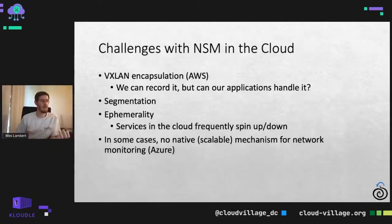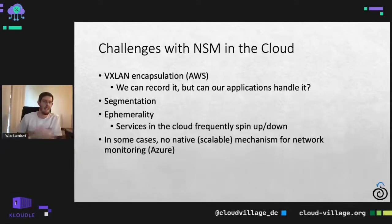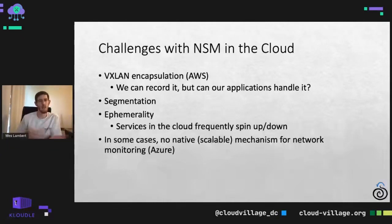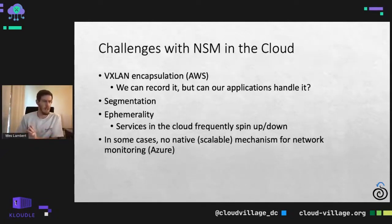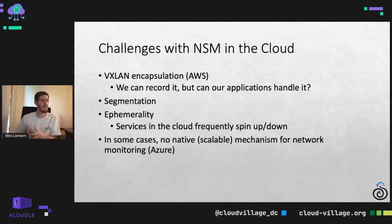In some cases there's no native, really scalable mechanism for monitoring the network. I highlighted Azure here — back in the day they had the virtual tap preview that never really went anywhere. Hopefully that gets revived and going public soon. For some cloud platforms that capability is just not there. Azure does have some partners that do this through agents and their own VXLAN tunnel, but there's no native mechanism.